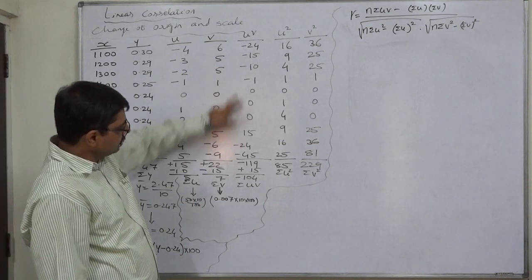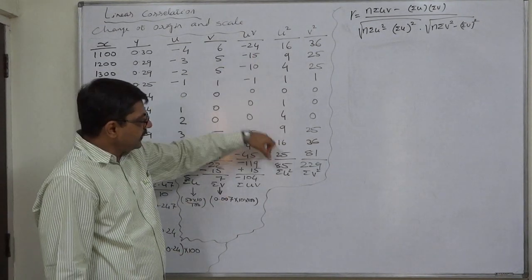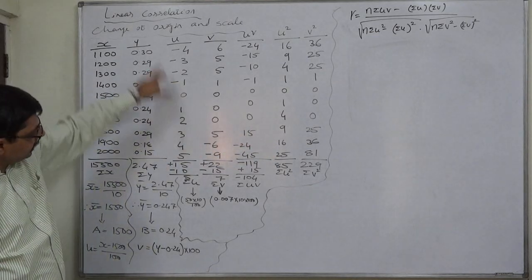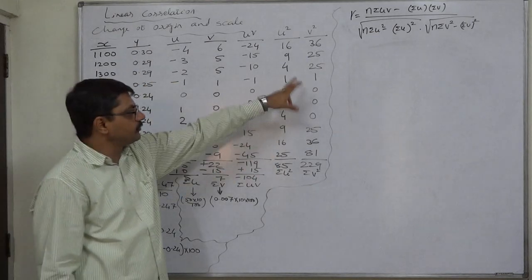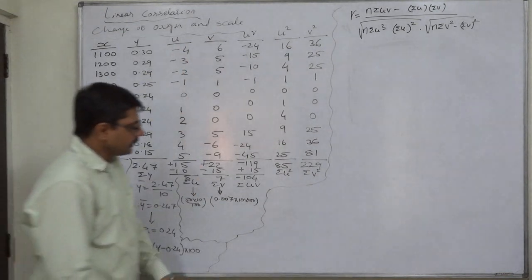Now this is uv; the summation is minus 104. U square - that means squared value of all values of new variable u - and v square is squared values of all new values of the new variable v.